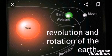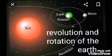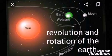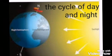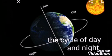Our earth rotates around its axis and also revolves around the sun. We receive light from the sun in daytime, and nights are dark. As the earth rotates around its axis, the part of its surface which turns towards the sun becomes bright — it is daytime. The part that moves away from the sun moves into darkness.